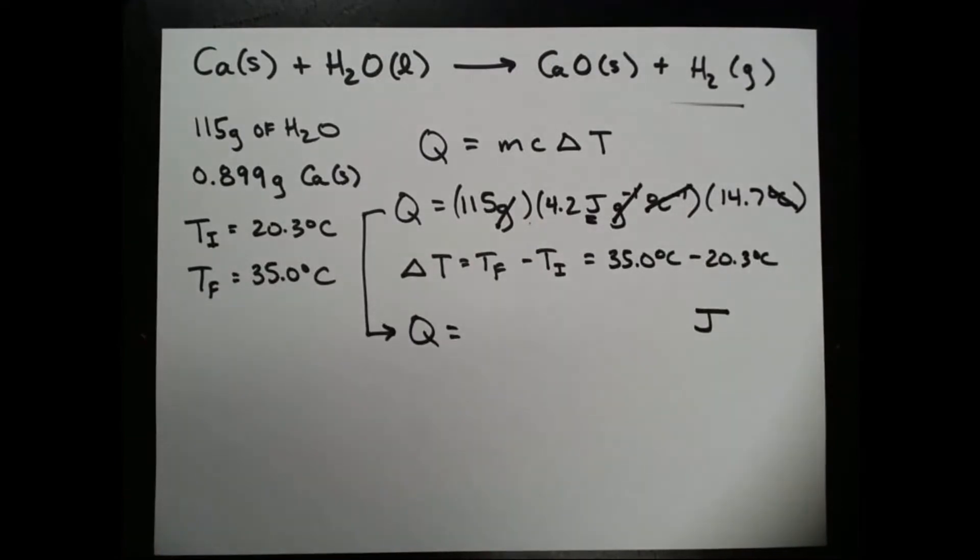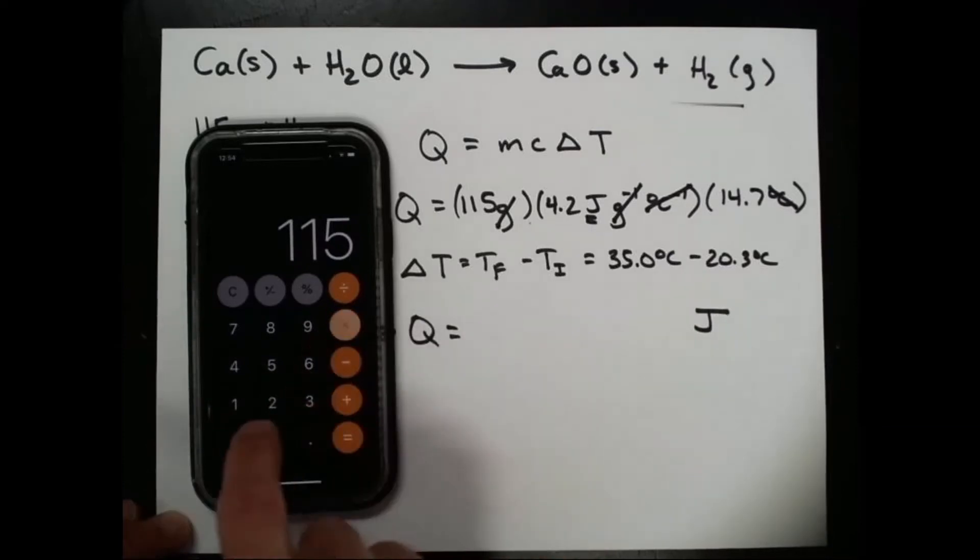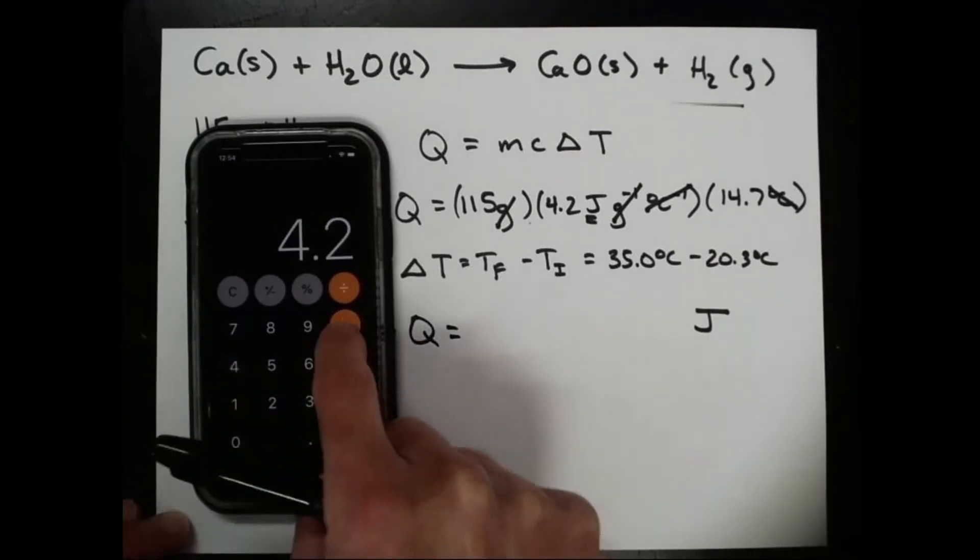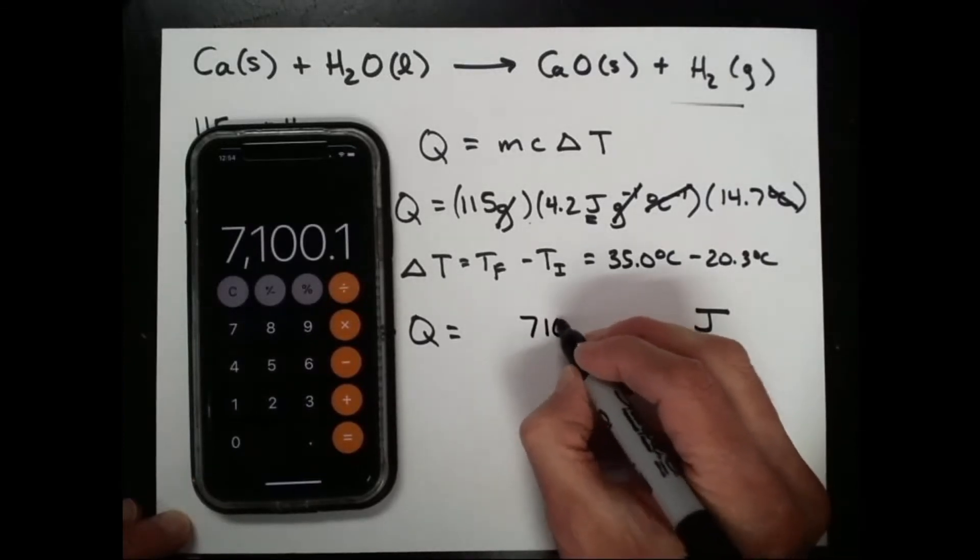Now we can do the numerical portion of the calculation. 115 times 4.2 times 14.7, 7,100 joules.